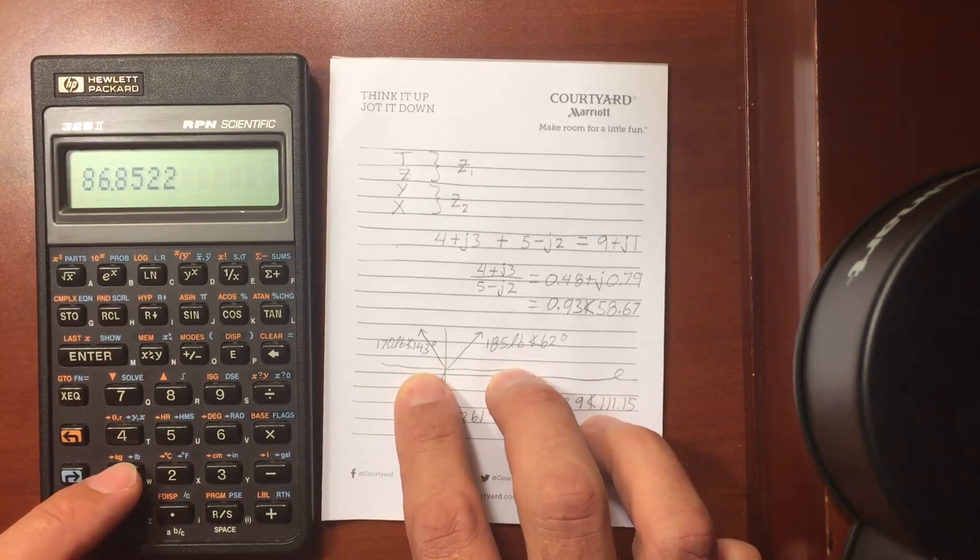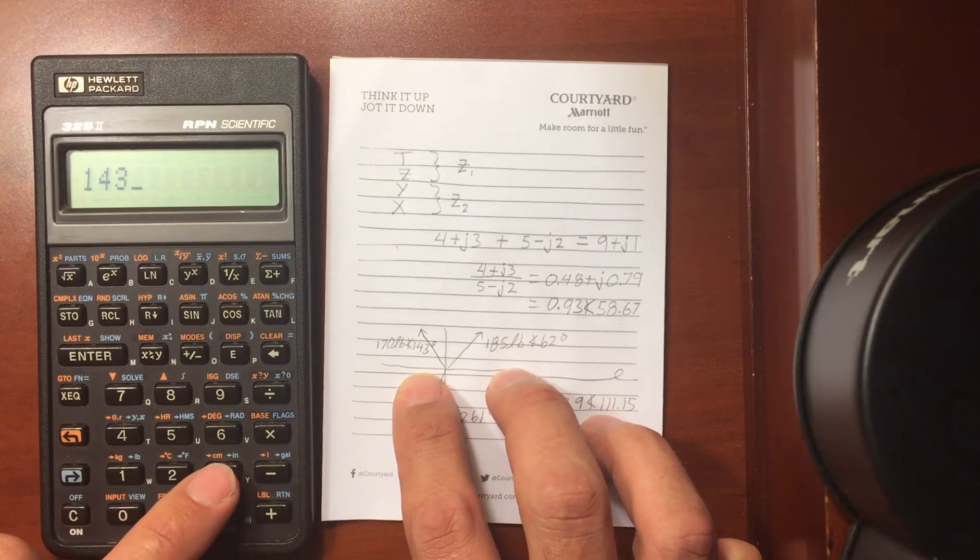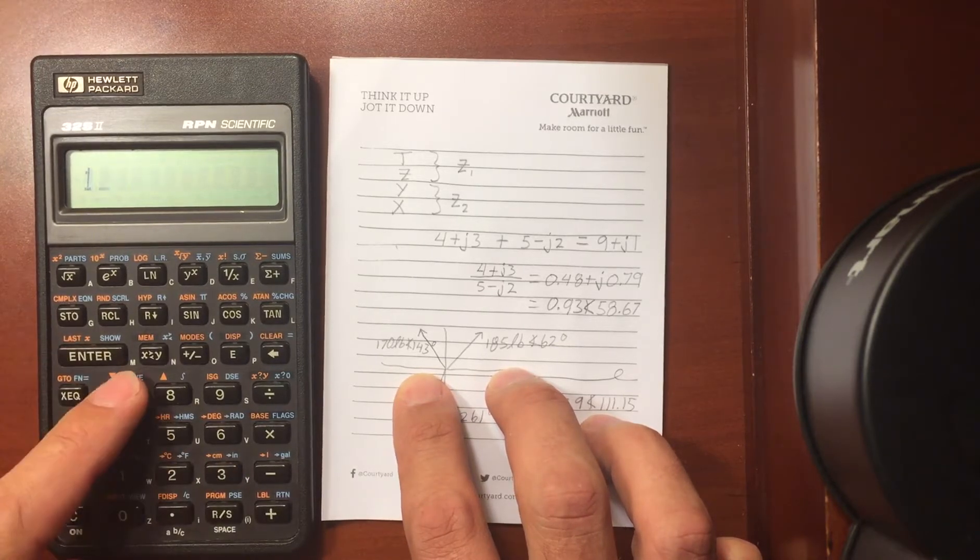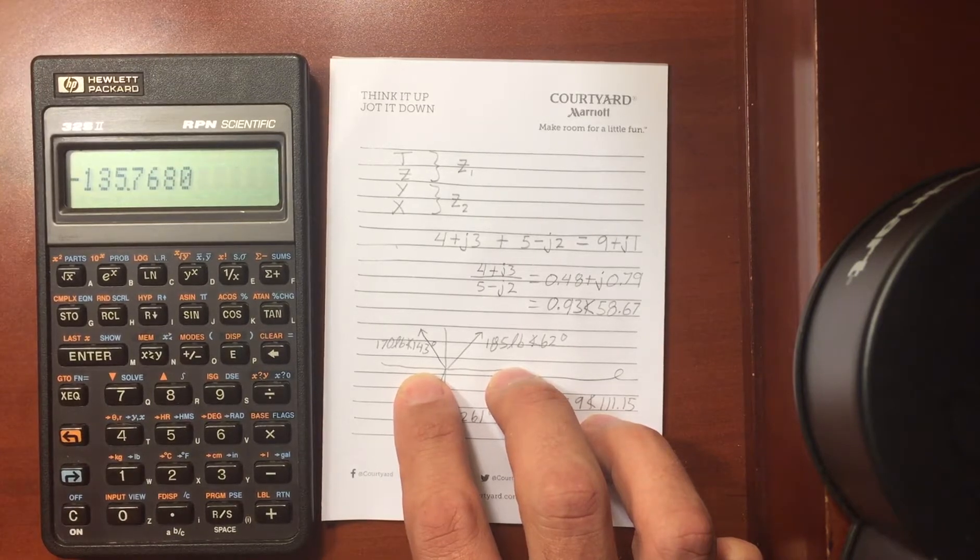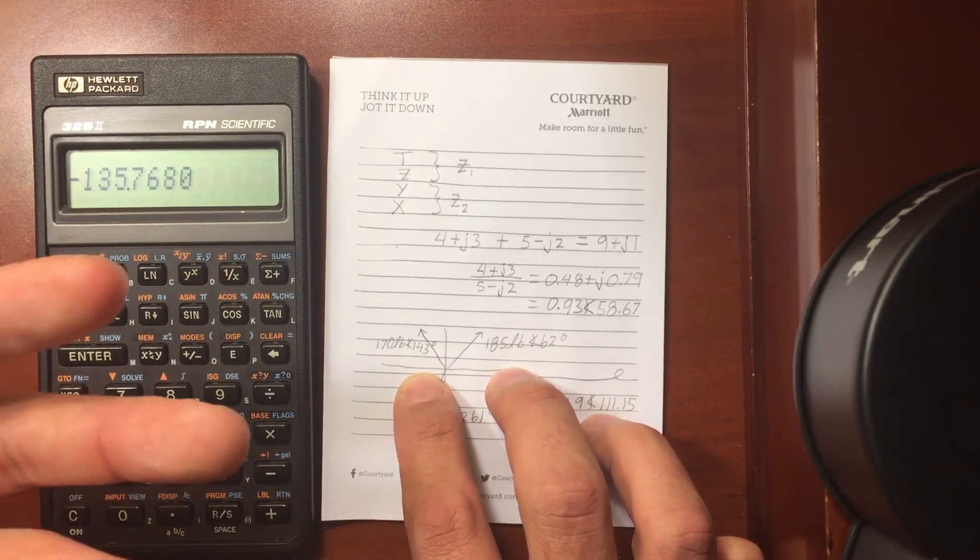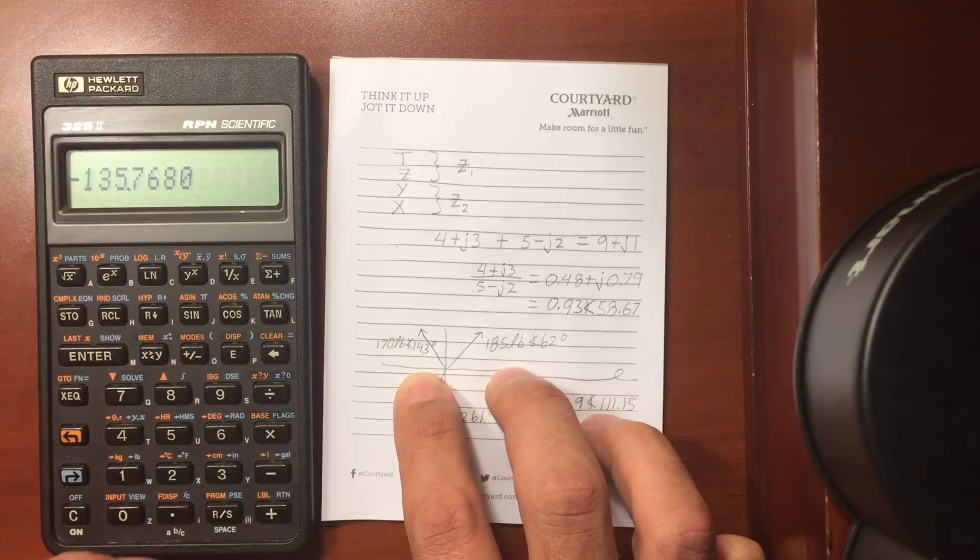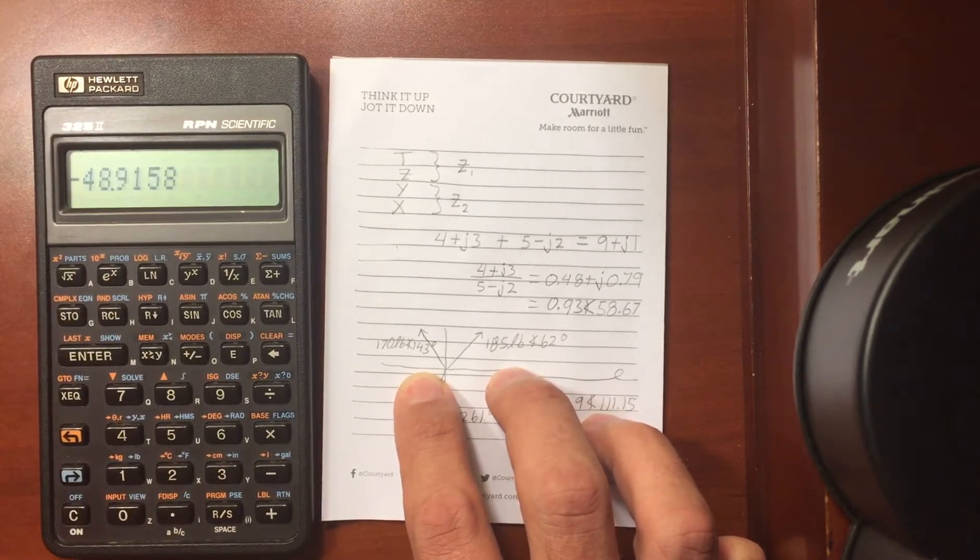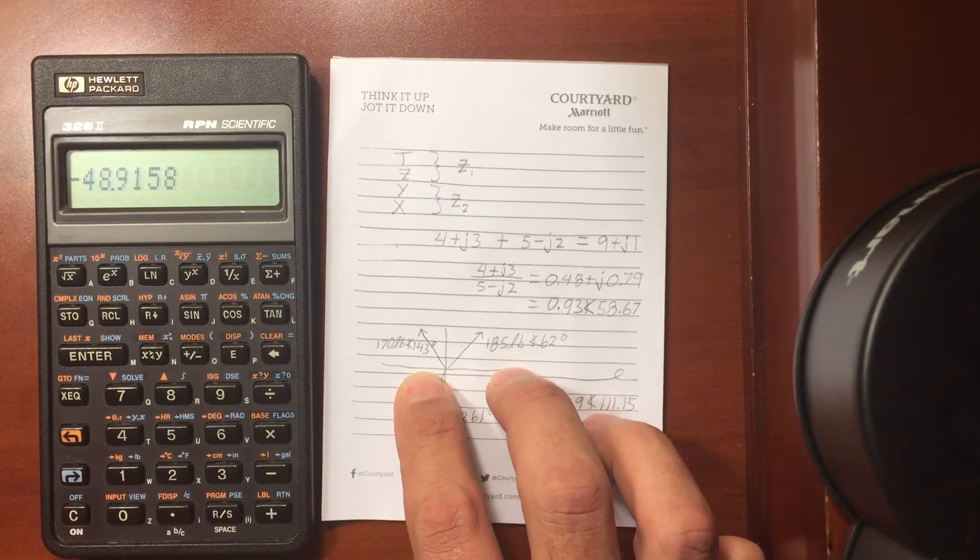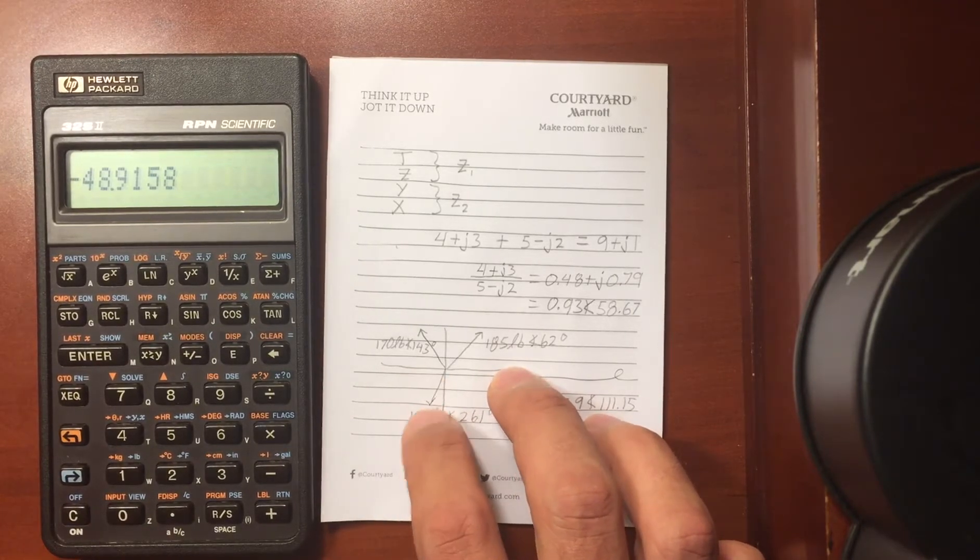Now I need my second number, which is 143 for the angle, and 170 for the magnitude, convert that into rectangular. Now I've got those four numbers in the stack, so I need to go ahead and use a complex addition on those. Complex, add. Now I just have two numbers, one complex number in the stack.